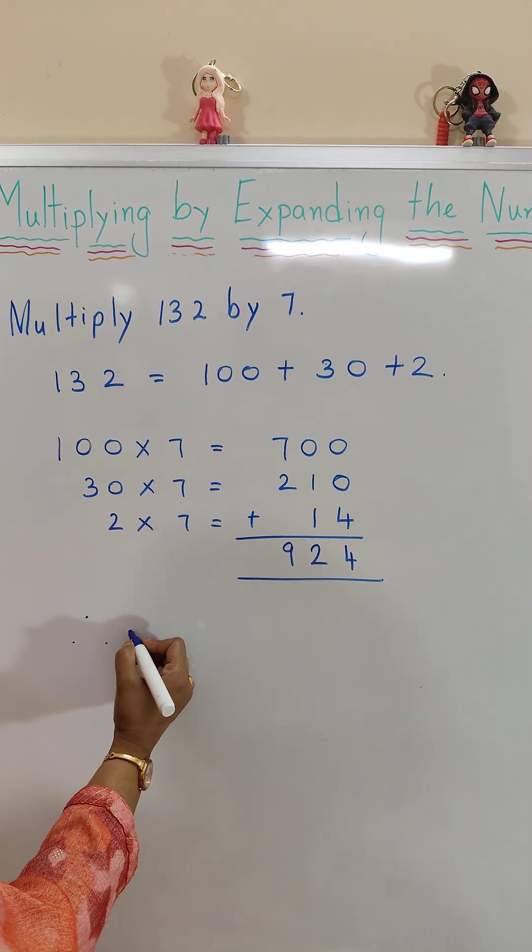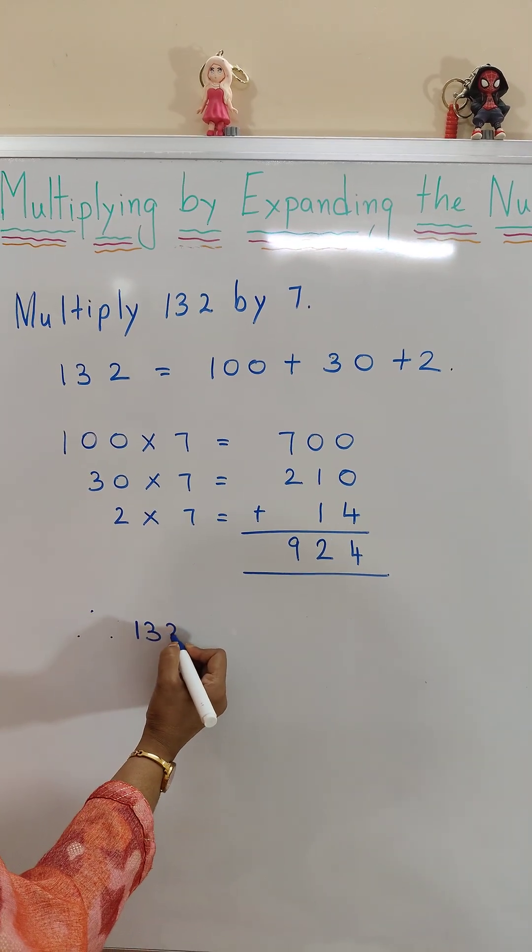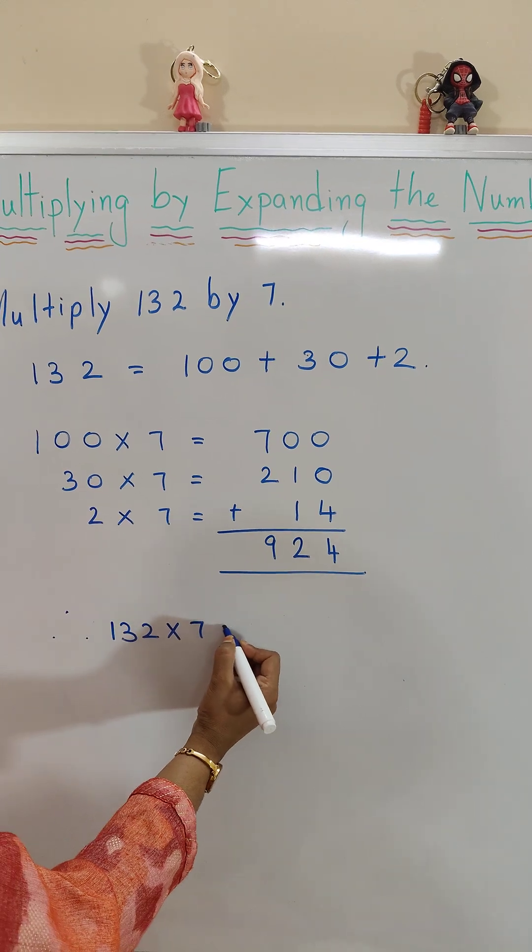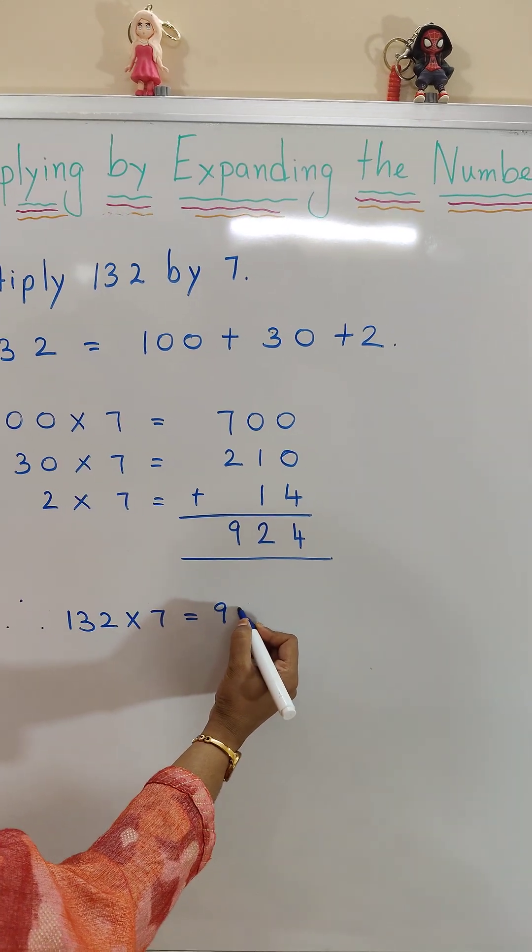Therefore, when we multiply 132 times 7, we get 924.